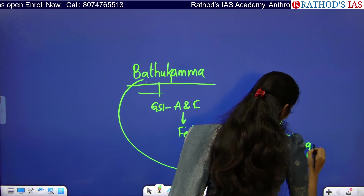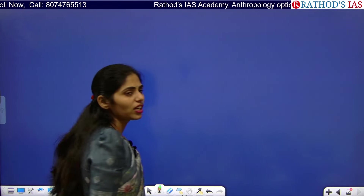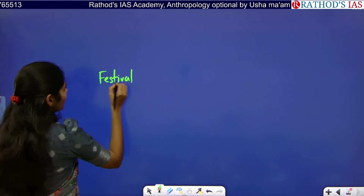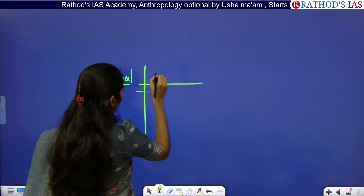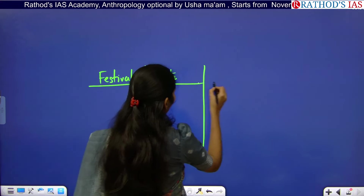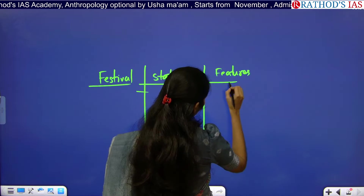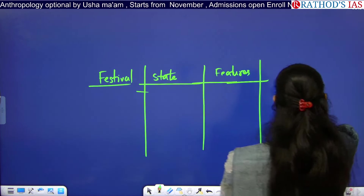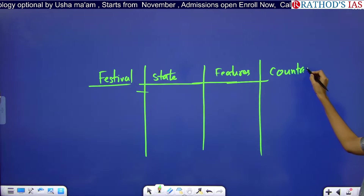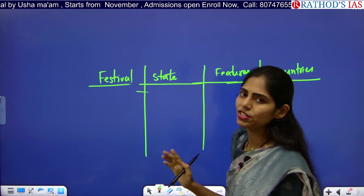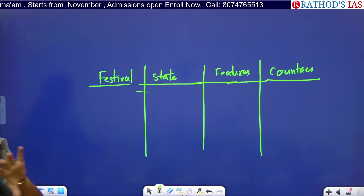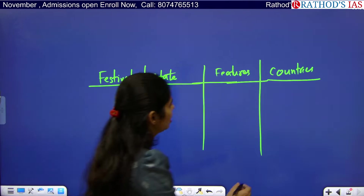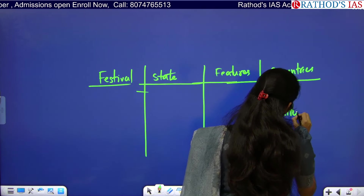There is a very high chance of getting questions from folk festivals. When making notes on this topic, you should note the festival name, the state it belongs to, and its special features. You should also note how these festivals promote our culture in other countries — for example, Bathukamma is also celebrated in the US among the Indian community in various regions. These folk festivals enrich our cultural diversity.